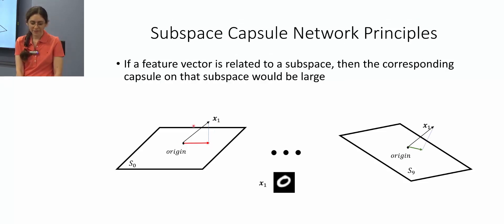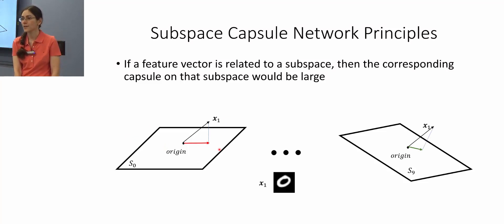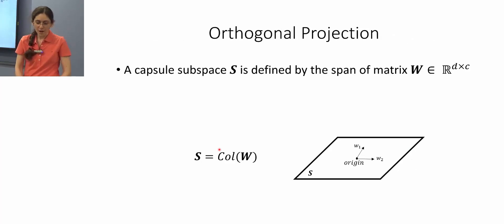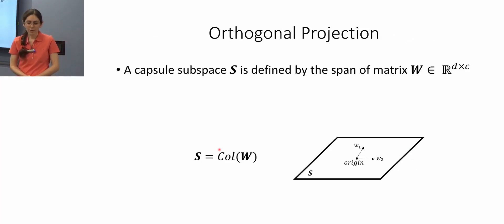So if an input feature vector is related to a subspace, then the corresponding capsule on that subspace would be large. Now let's formalize the orthogonal projection problem.